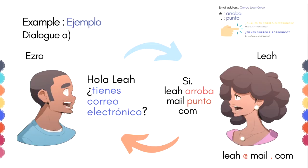Now let's see some examples. Ejemplo, Dialogue A — we have Ezra and Leah. Ezra says: Hola, Leah. ¿Tienes correo electrónico? And Leah replies: Sí, followed by her email address — leah arroba mail punto com.